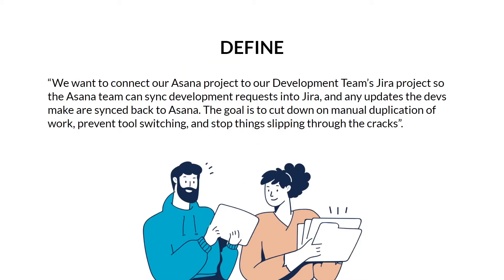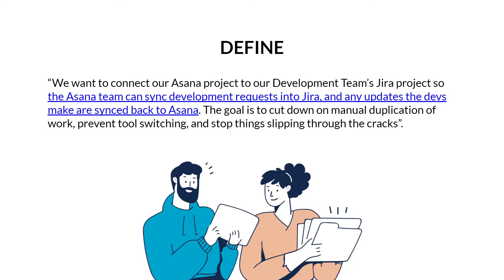First, define your flow. Think about what it is you're trying to do and what your goal is. For example, we want to connect our Asana project to our development team's Jira project, so the Asana team can sync development requests into Jira and any updates the devs make in Jira are synced back into Asana. The goal is to cut down on manual duplication of work, prevent tool switching, and stop things slipping through the cracks.